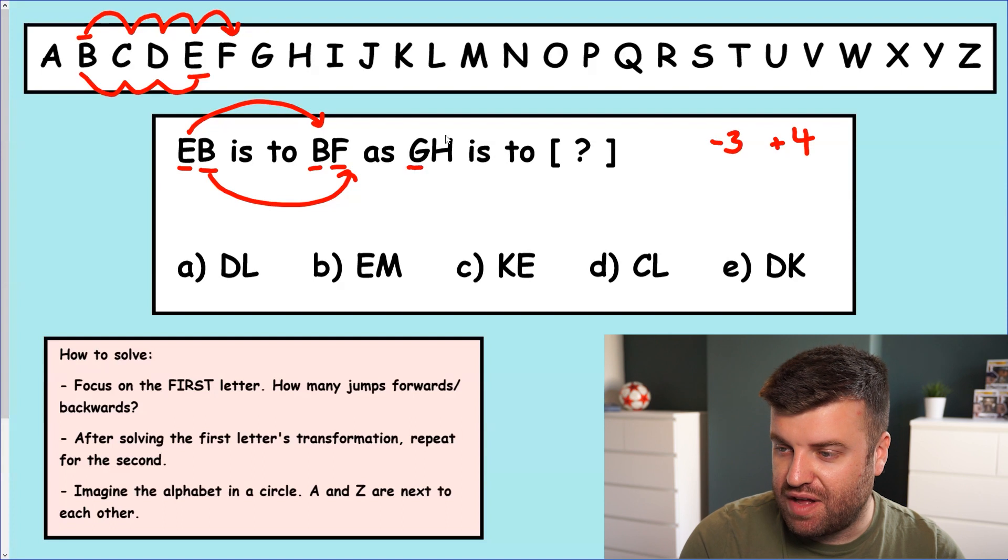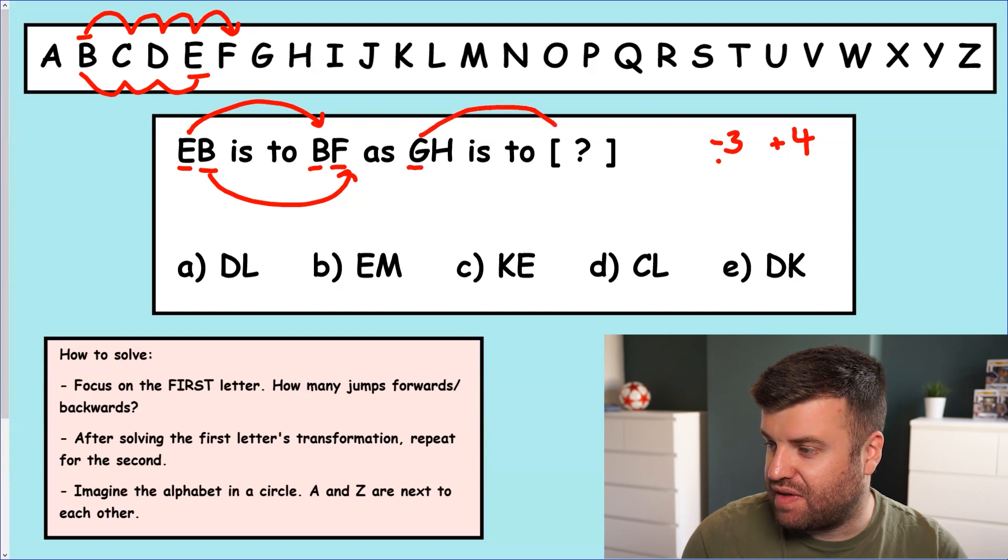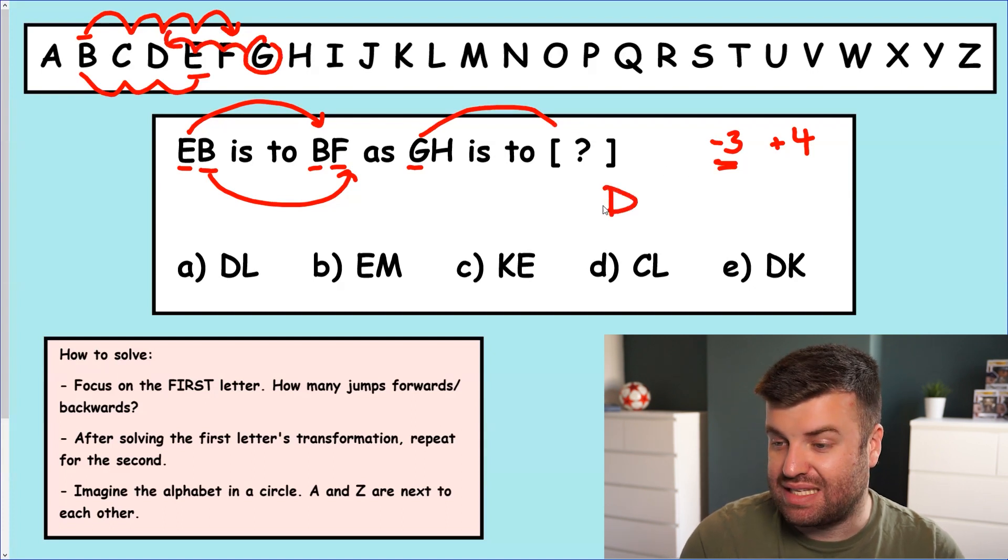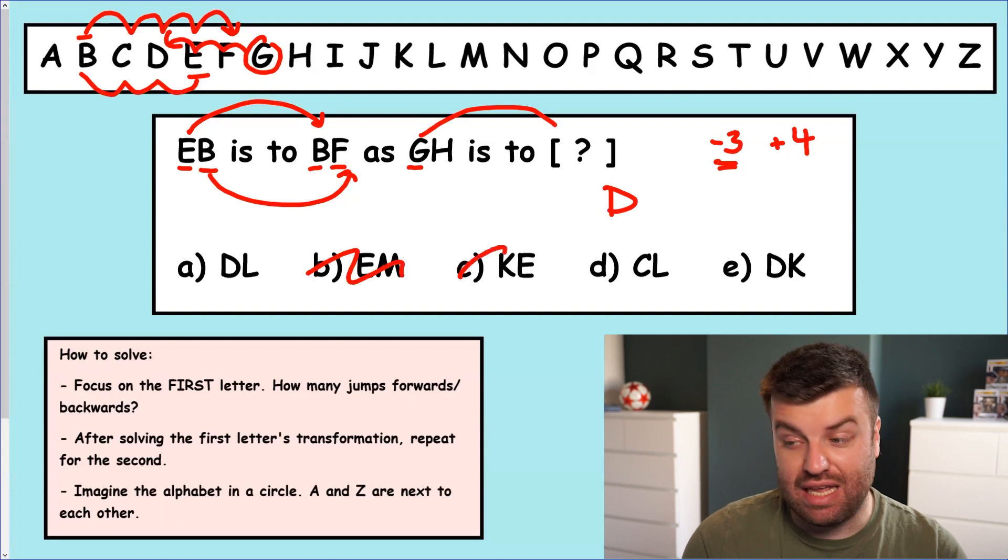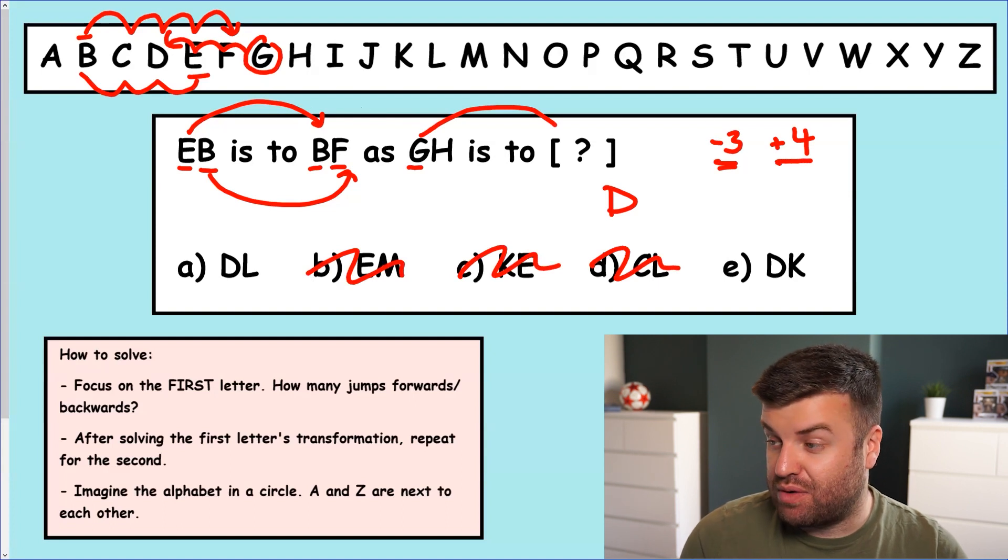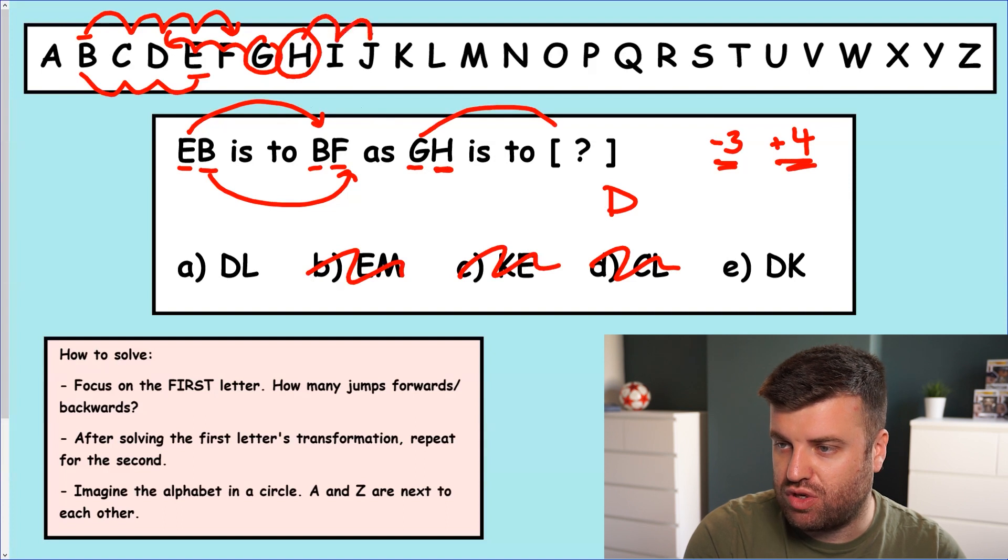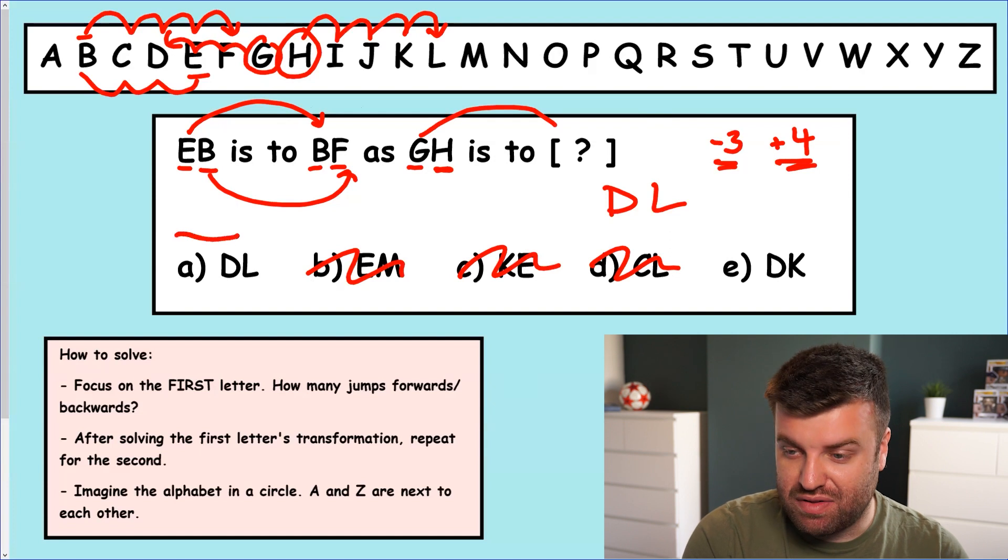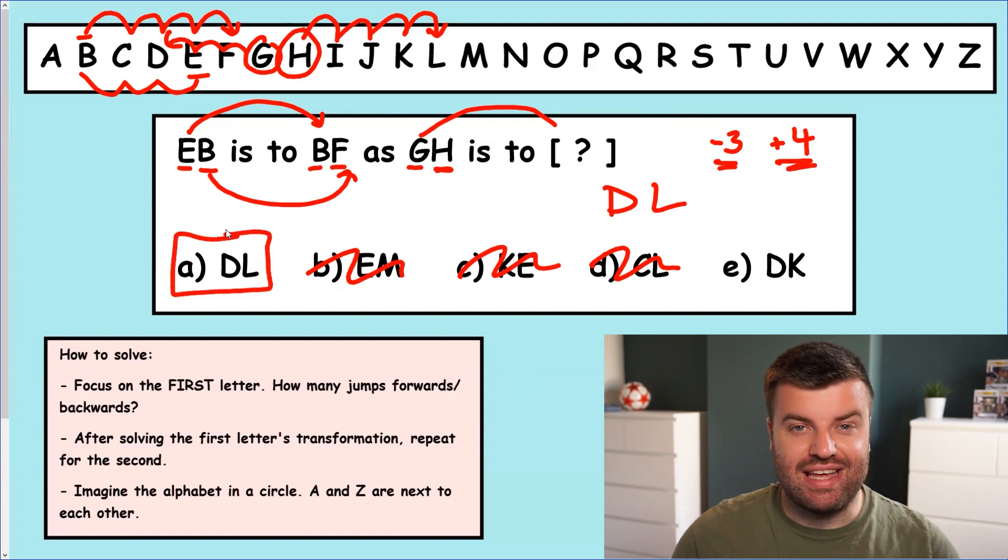So GH, the first letter we checked over here was minus three. So we go to G, which is here. And we go one, two, three, goes to D. So our first letter is D. We can get rid of B. We can get rid of C. We can get rid of D here. Now the second letter. We did B to F, which we found was plus four. So our second letter here is H. We're going to go to H. And we're going to do one, two, three, four. The second letter is L. It's one of the options. The answer is A.